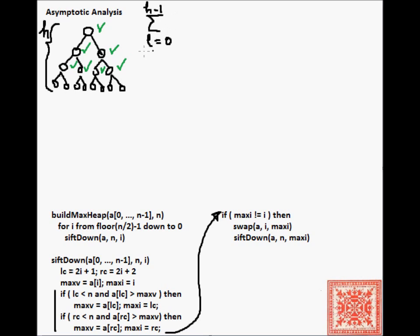At each level, we have to work with 2 to the l nodes. Because in the complete binary tree, at level l, there are 2 to the l nodes.